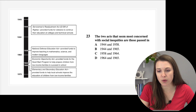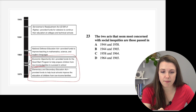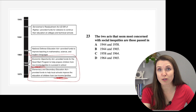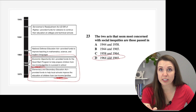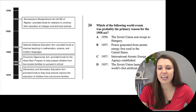Question twenty-three: the two acts most concerned with social inequities are those passed in which years? The 1964 Economic Opportunity Act and the 1965 Elementary and Secondary Education Act both specifically mention low-income families — that's the social inequity. The answer is D — 1964 and 1965.